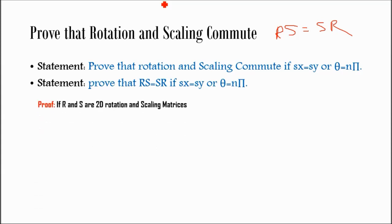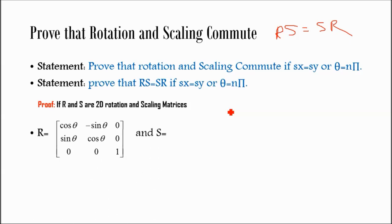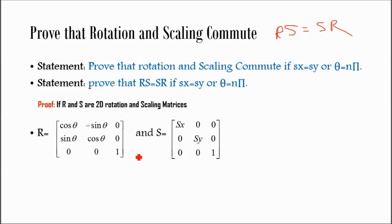R and S are the 2D rotation and scaling matrices. The rotation matrix is: cos-theta, minus sin-theta, 0; sin-theta, cos-theta, 0; 0, 0, 1. The scaling matrix is: sx, 0, 0; 0, sy, 0; 0, 0, 1.